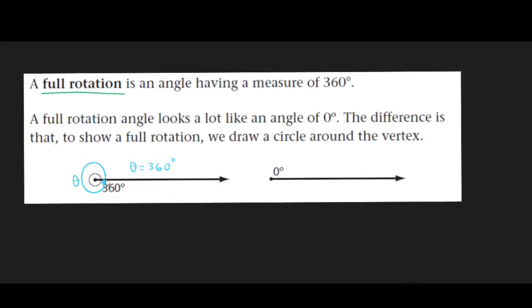Full rotation angles measure 360 degrees. We start from one point and then move in a circle back to the endpoint we started from. This is similar to a zero degree angle because it doesn't move from its point.